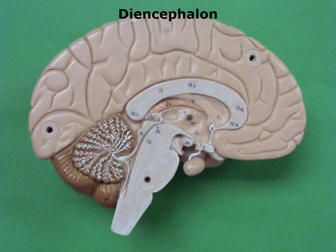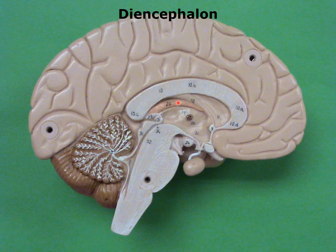This is a midsagittal section of the human brain, and I'm going to identify the various structures of the diencephalon. Our point of reference as usual is the third ventricle. You're looking at one wall of the third ventricle — the thalamus — and here's the intermediate mass of the thalamus. The epithalamus consists of the choroid plexus and the pineal body. The hypothalamus is here, and attached to it are the pituitary gland and the mammillary body.